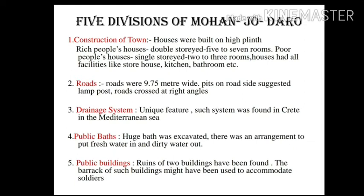Roads are the main feature of Mohenjo-daro. They were very wide, having 9.75 meters width, allowing many vehicles to pass at the same time. Pits on the roadside suggest they might have been used for erecting lampposts. There were two main roads — one in the north-south direction and the other in the east-west direction — crossing at right angles. Many small link roads also connected these main roads, and all roads were straight without any turns.